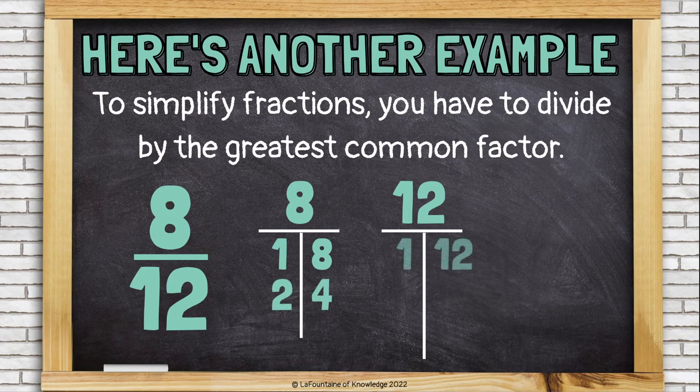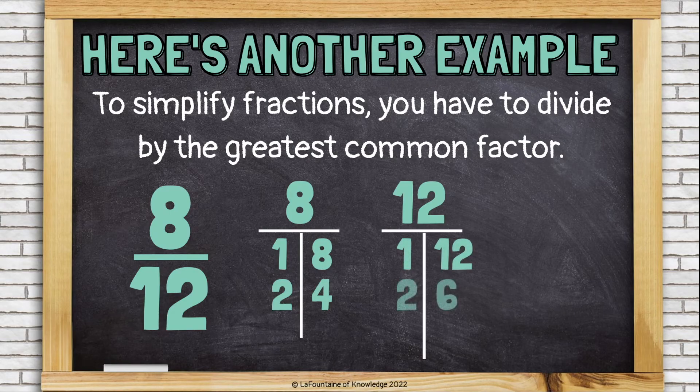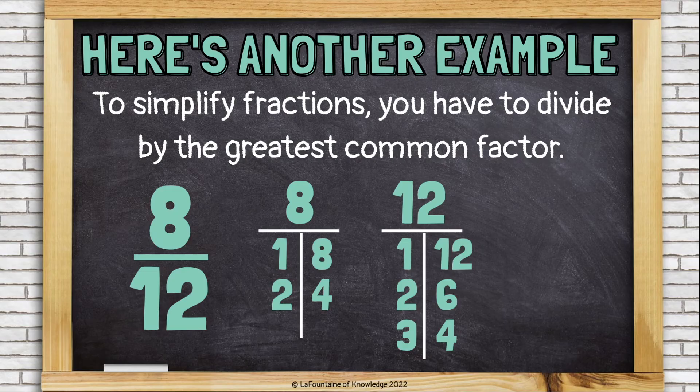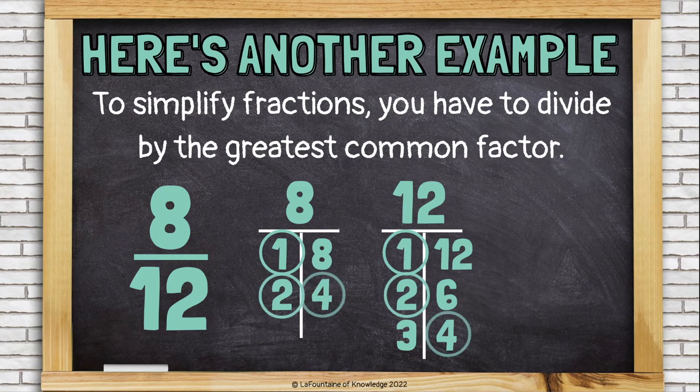Okay. For twelve, we have one times twelve. Two times six. And three times four. Now let's look at which factors they have in common. They both have one. They both have two. And they both have four.